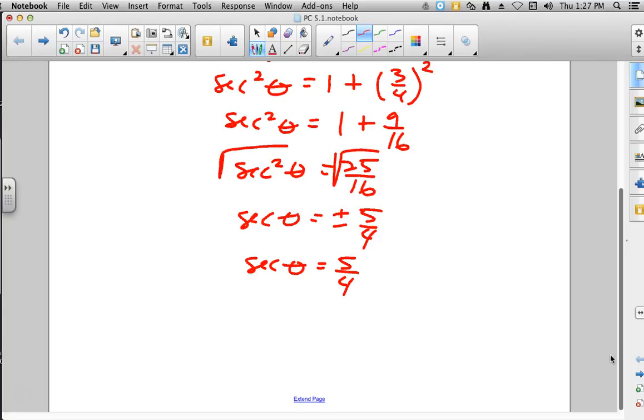Next up would be, okay, well, how do we use that to get to something else? Well, secant is the reciprocal of cosine. So here's our secant. Let's take the reciprocal of that, and that will be cosine.